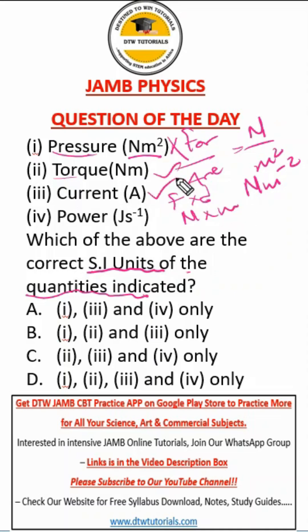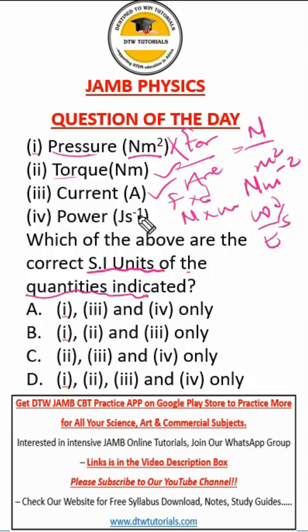Current is Ampere — correct. Power is work over time, and this is joules over seconds, so joules per second. So this is correct.